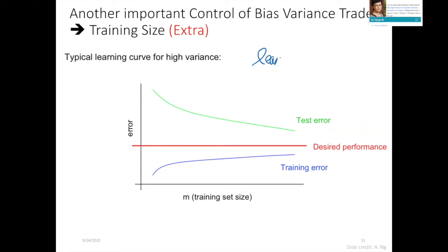If the training and validation errors are very far apart even after adding a lot more training data, this normally means you're in a high-variance regime, which is overfitting.